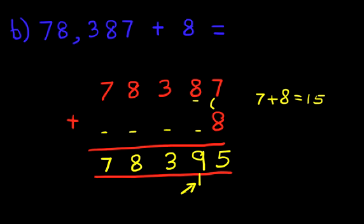And we have our answer. 78,395. And that is correct. So that is how we do addition of five-digit numbers and ones using the vertical format.